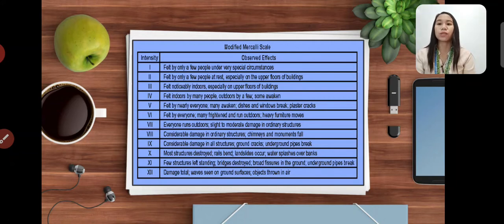Intensity 7, everyone runs outdoors, slight to moderate damage in ordinary structures. Intensity 8, considerable damage in ordinary structures, chimneys and monuments fall. Intensity 9, considerable damage in all structures, ground cracks, underground pipes.